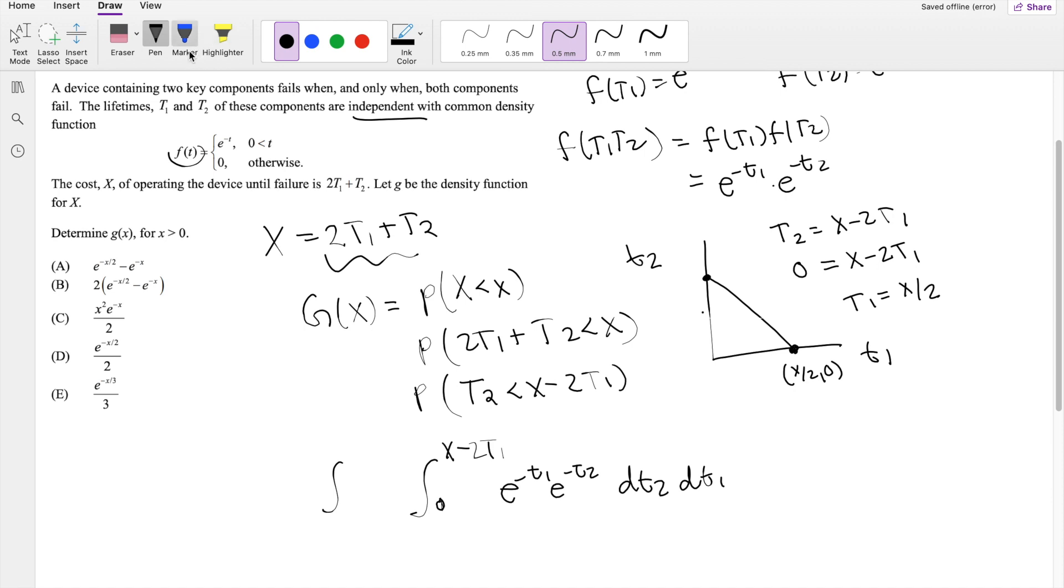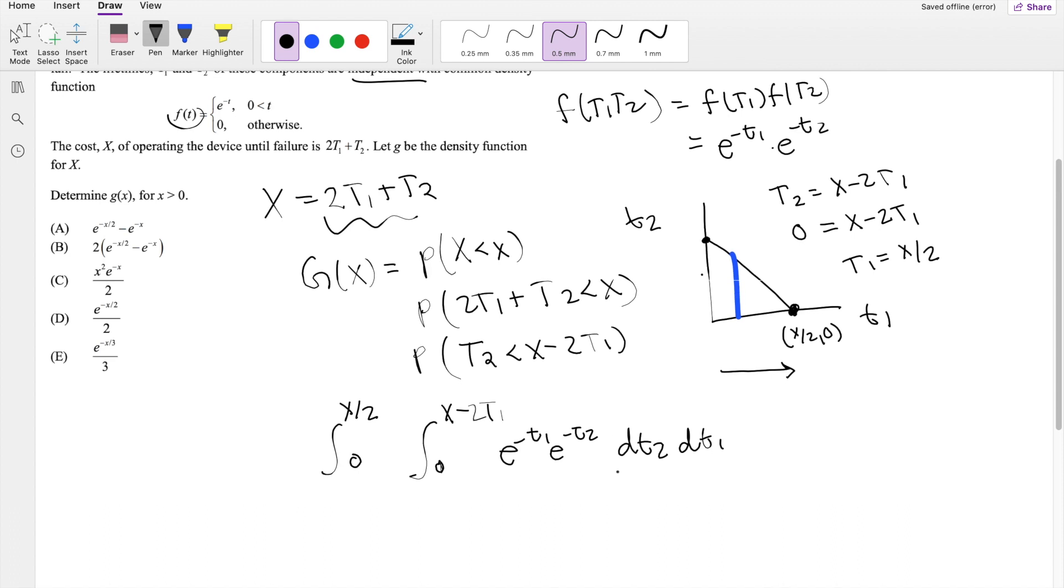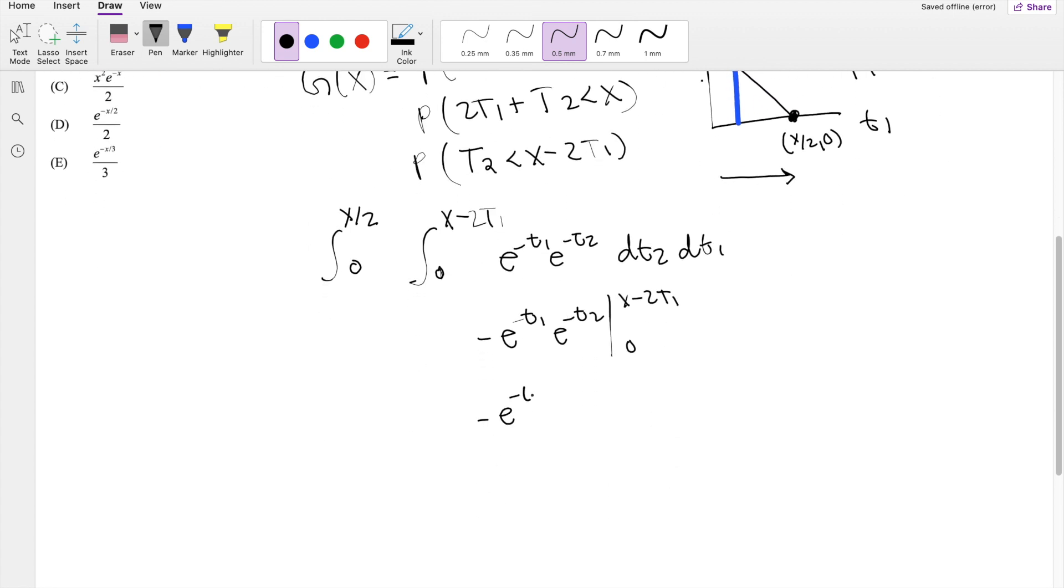So then if we're solving in terms of dt2, the upper limit indeed is this function here. But then what is dt1 integrated from? It's going from 0 to this point, which is x over 2. Alright, so now we're ready to just rock and roll. Integrating this with respect to dt2, this is just equal to negative e to the negative t1, e to the negative t2. And you're going to integrate it from 0 to x minus 2t1. This part just stays the same, I'm going to pull it out because it's a constant. Plugging in the upper limit here, you're going to get e to the negative x plus 2t1 minus e to the negative t1.